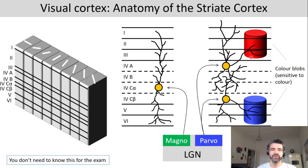If we look into one layer, we see that M and P cells feed into different layers. Input from P cells also feeds into color blobs that are sensitive to a particular color.